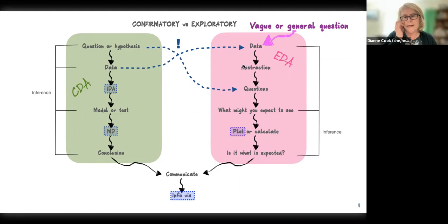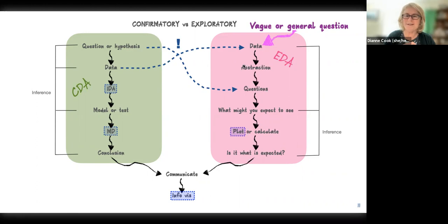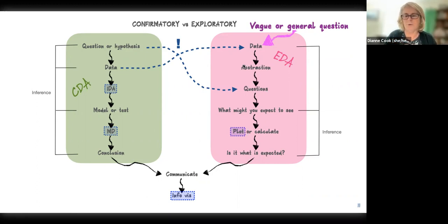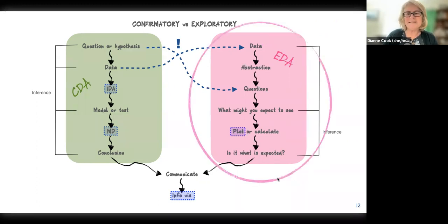After abstraction, brainstorm questions: what might we be able to answer given these variables and your knowledge of the world? It's also good to think about what you might expect to see — a kind of informal pre-registration — so you can assess whether results are surprising or sensible. Then you make lots of plots and calculations, compare with expectations, and potentially do some inference to communicate results.